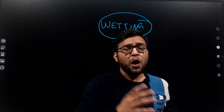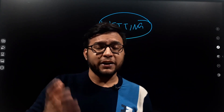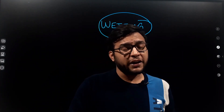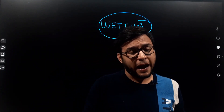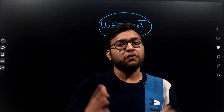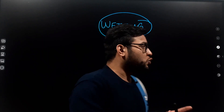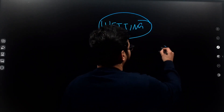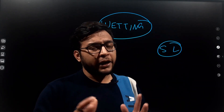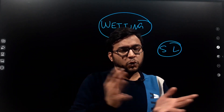What is the definition? Wetting is the extent of contact between the solid and the liquid when they are just brought in contact with each other.